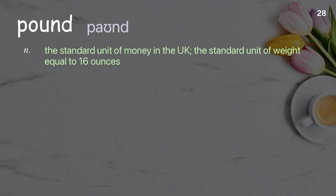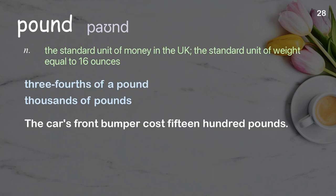Pound: The standard unit of money in the UK; the standard unit of weight equal to 16 ounces. Examples: three-fourths of a pound, thousands of pounds. The car's front bumper cost 1,500 pounds.